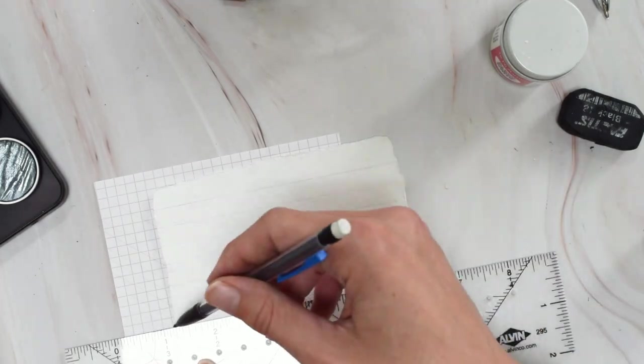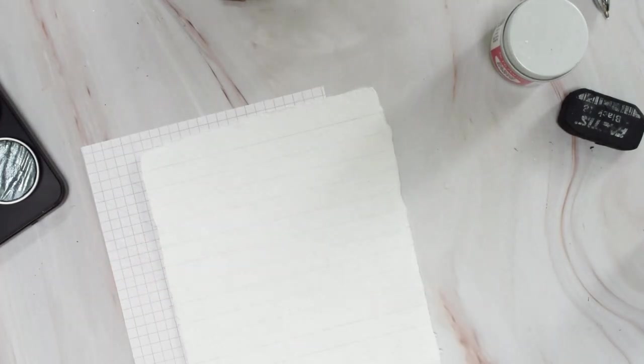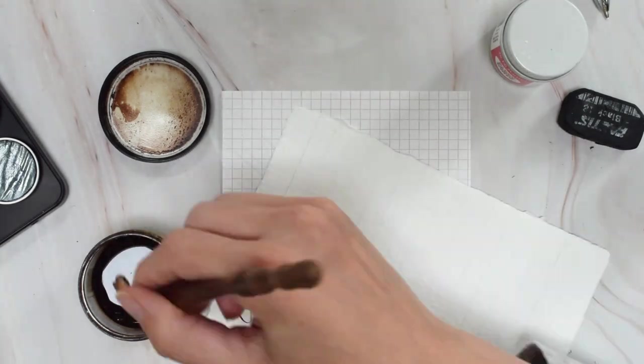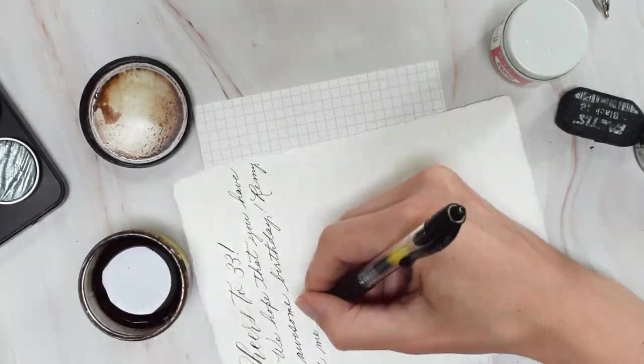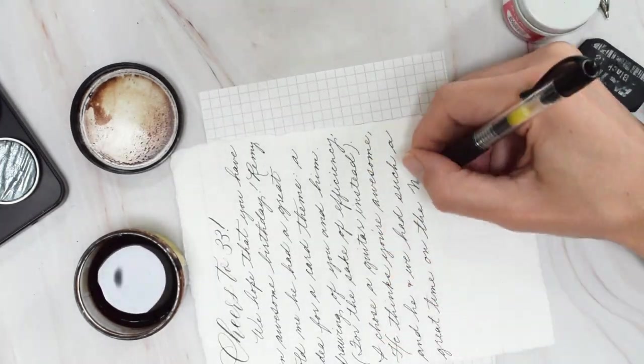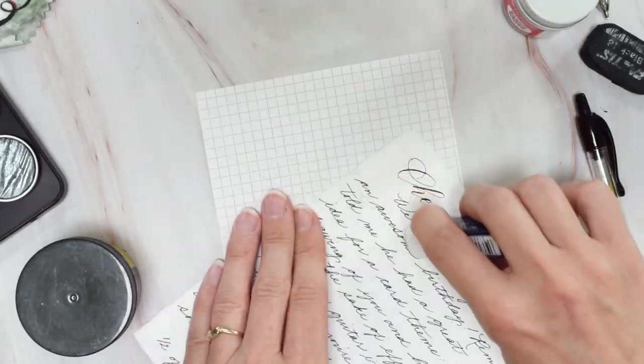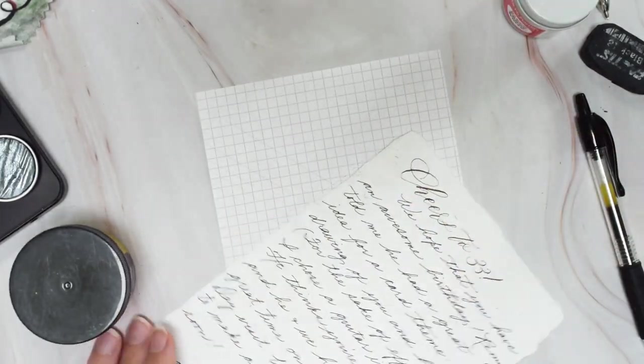This card will have a 3D component to it because the guitar is going to be offset on the front. So right now is the easiest time to write a birthday message on the back of the card. So go ahead and do that. You can see that I used a mix of calligraphy and just a regular pen and then go ahead and erase any pencil guidelines that you used.